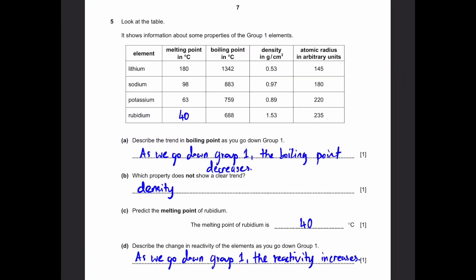Question 5. Look at the table. It shows information about some properties of group 1 elements - lithium, sodium, potassium, rubidium. The melting points, boiling points, density in grams per centimeters cubed, and atomic radius are given. Part A: Describe the trend in boiling point as you go down group 1. As you go down group 1, the boiling point decreases. We can see the boiling points: Lithium has 1342 degrees, sodium has 883 degrees, that's nearly 500 degree difference. Potassium is 759 degrees, about 130 approximately difference. Rubidium is 688, approximately 100 degree difference. We can clearly see that it's decreasing as you go down.